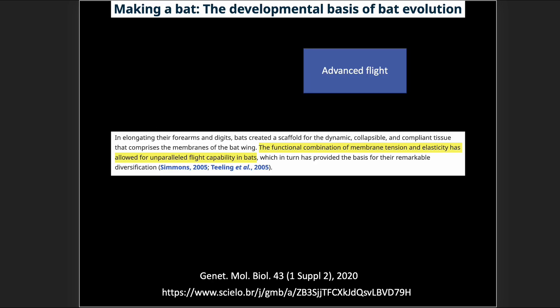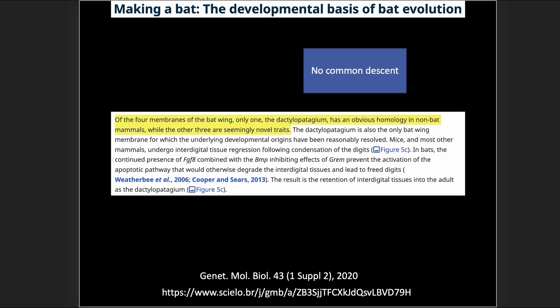Bat flight is sophisticated and advanced. 'The functional combination of membrane tension and elasticity has allowed for unparalleled flight capability in bats.' Of the four membranes of the bat wing, only one — the dactylopatagium — has an obvious homology in non-bat mammals, while the other three are seemingly novel traits. Common descent is not helping here — these three different membranes in the bat are unique and novel, and they all had to have arisen to create bat flight.